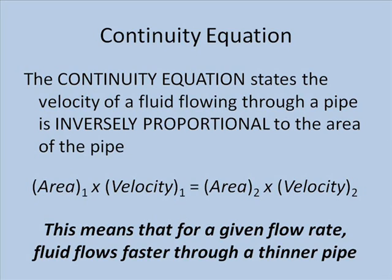If we wish to compare two pipes of different sizes, we can rewrite the continuity equation to state that the area of pipe 1 times the velocity of the fluid moving through pipe 1 is equal to the area of pipe 2 times the velocity of the fluid moving through pipe 2.